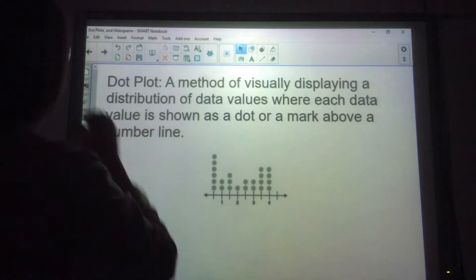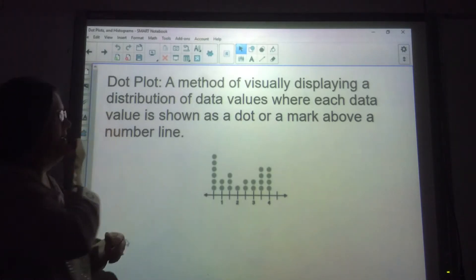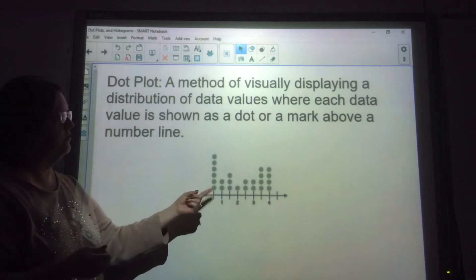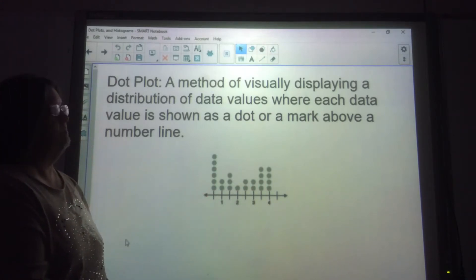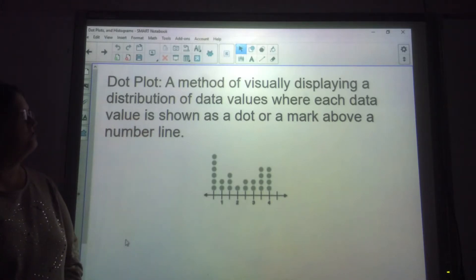Okay, we're going to be looking at dot plots and histograms today. This is a dot plot. It's literally made with dots. That's why they call it a dot plot. It's a method of visually displaying a distribution of data values where each data value is shown as a dot or a mark above the number line.